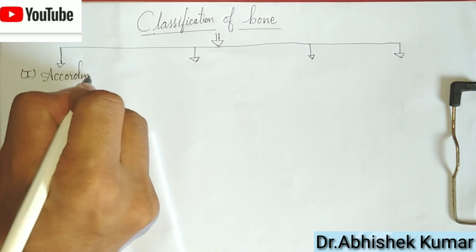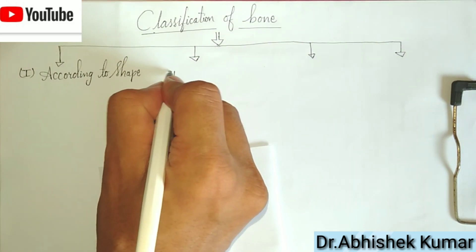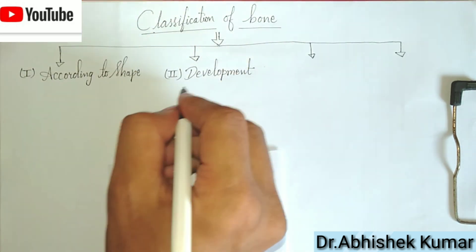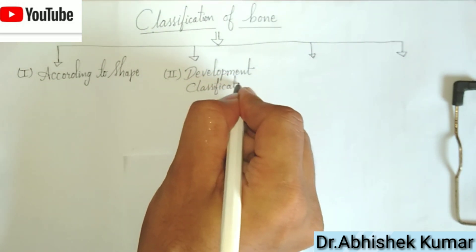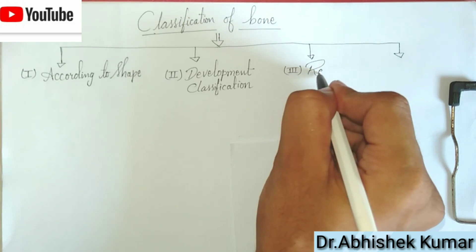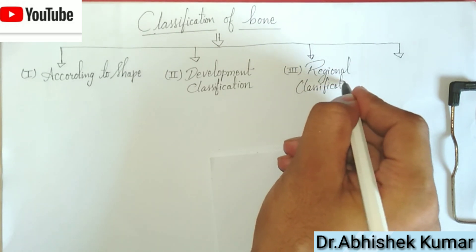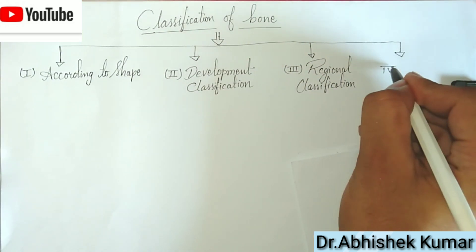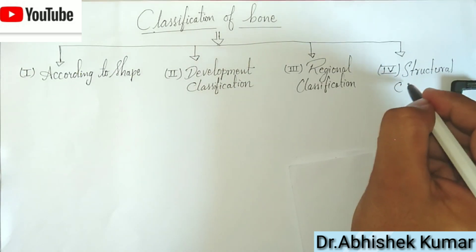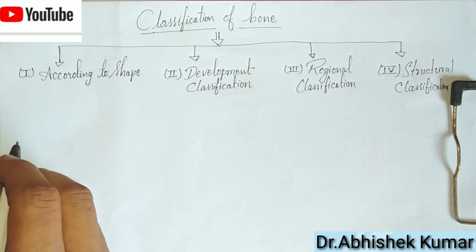The first type is classification according to shape. The second is developmental classification. The third is regional classification — in our previous video we talked about the regional classification of the bone. And the fourth one is structural classification.